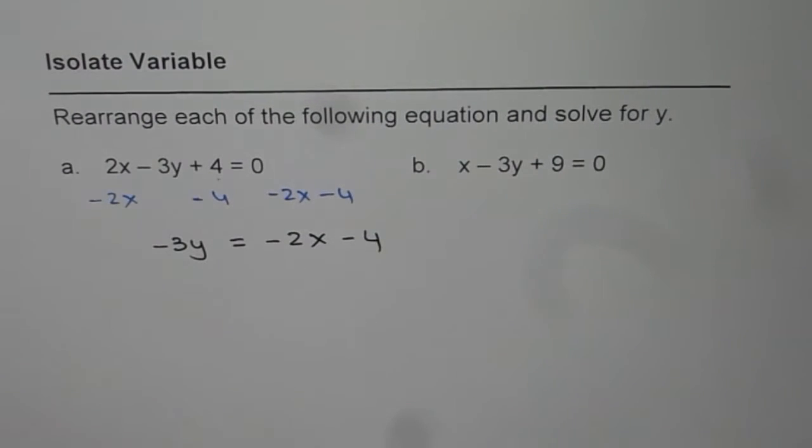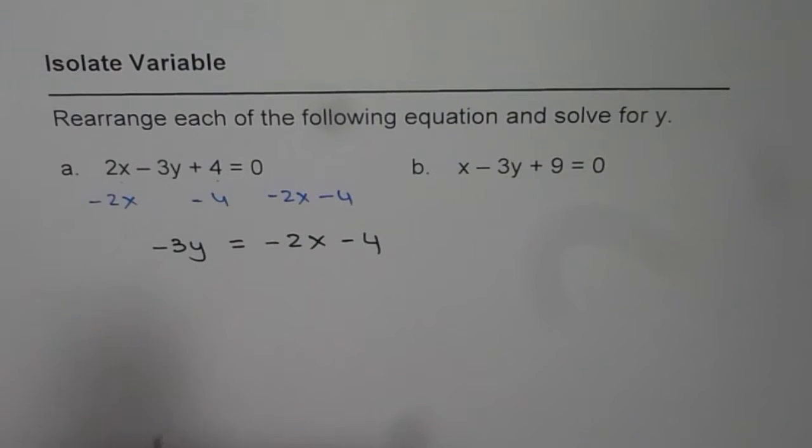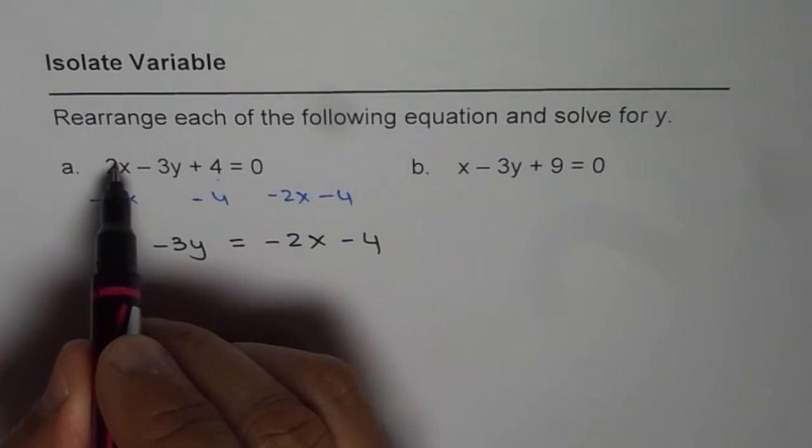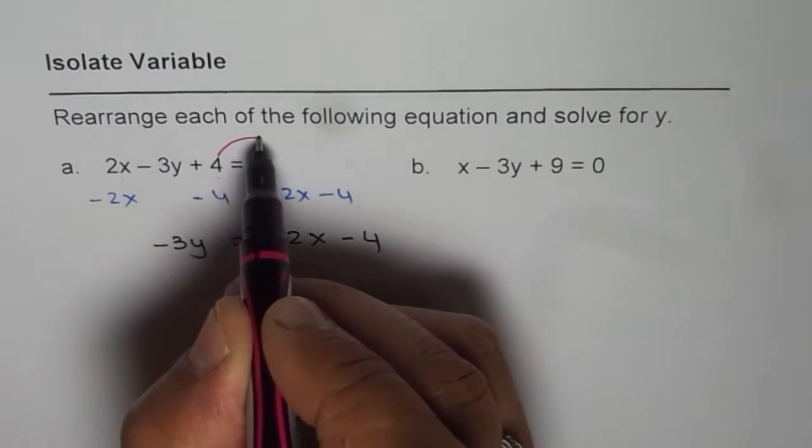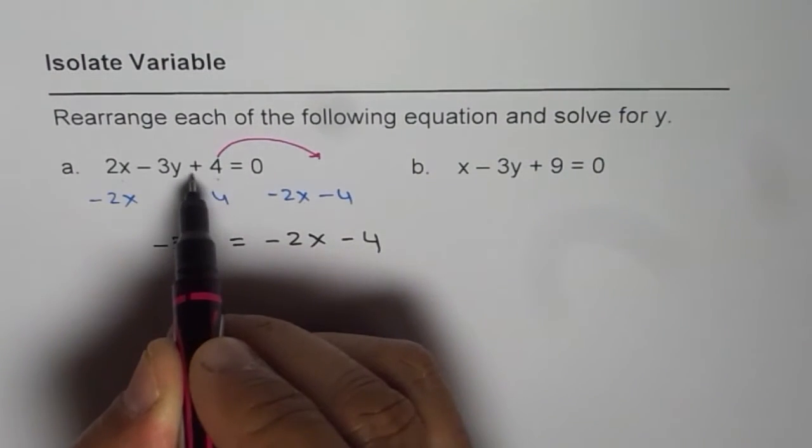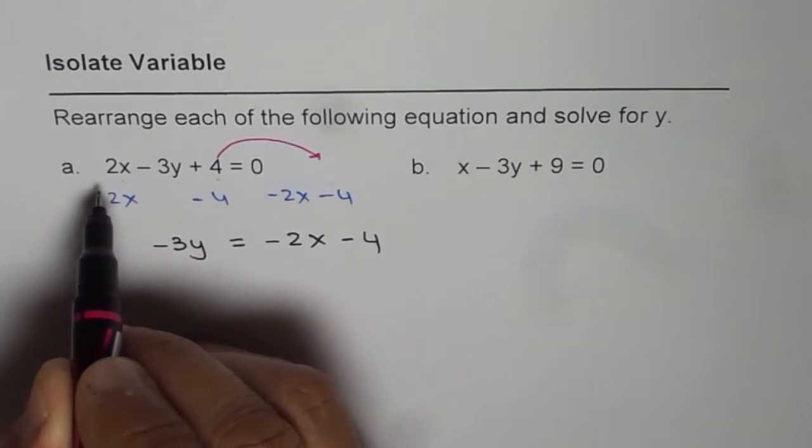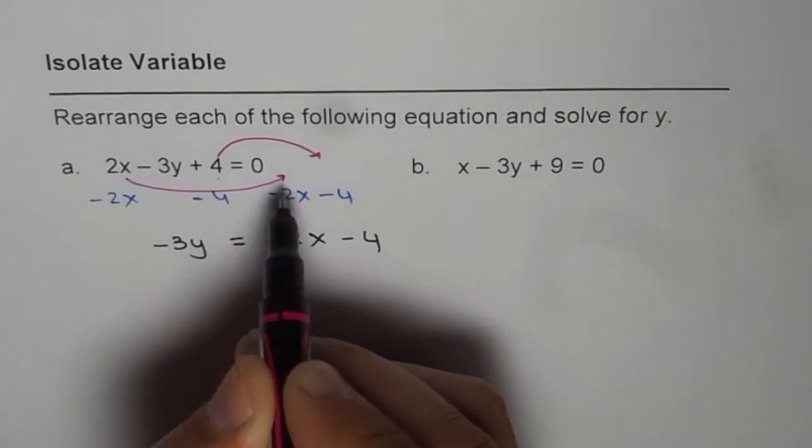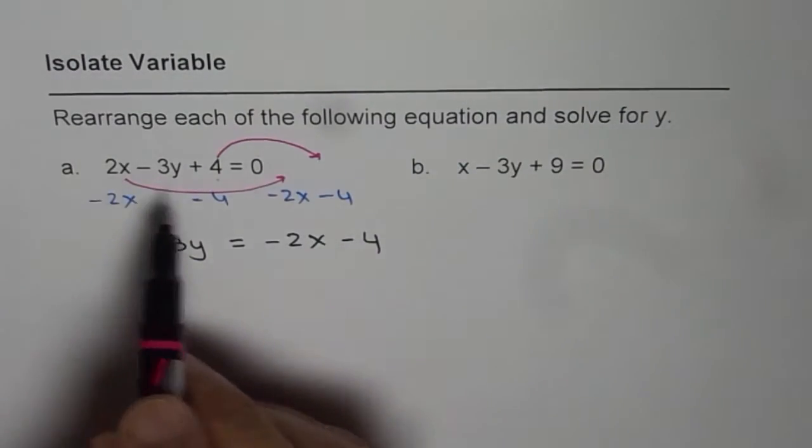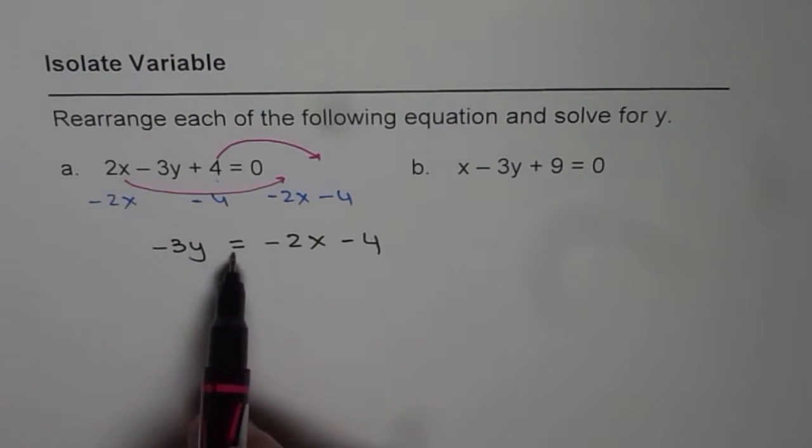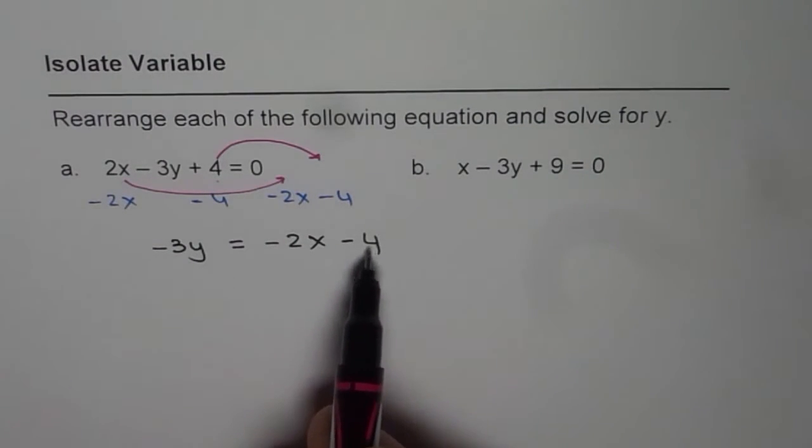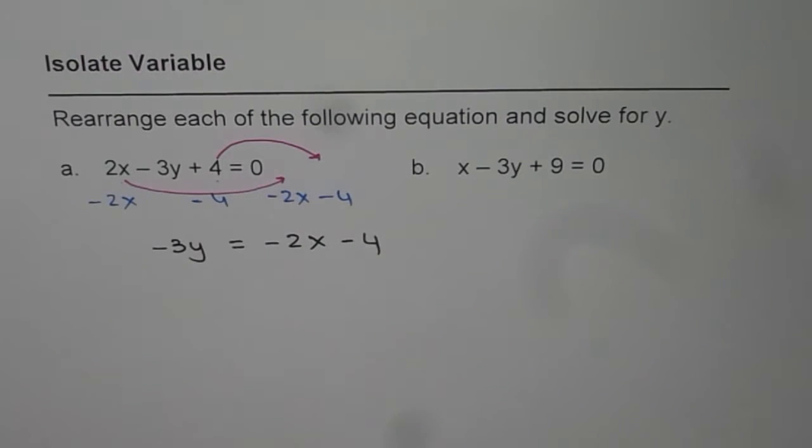For some of you who prefer to understand in the fashion as if we are taking these terms to the other side, taking 4 to the other side means negative of this number, minus 4, and taking 2x to the other side means minus 2x. If we do that, we get the same thing. Minus 3y equals to minus 2x minus 4. So either way you could do.